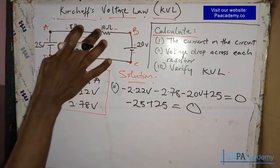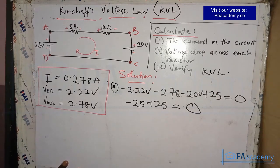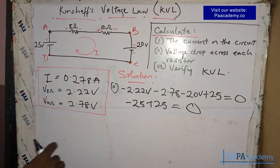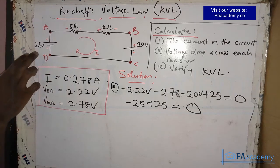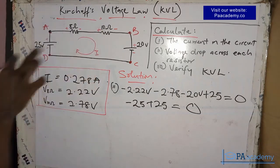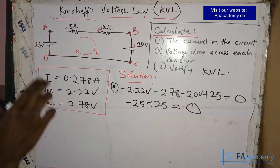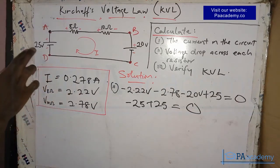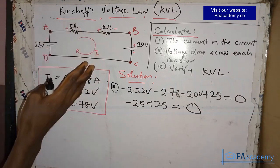This confirms that the circuit is in line with Kirchhoff's Voltage Law — the algebraic sum of voltages in a closed loop equals zero. In other words, the total voltage generated by the voltage sources is exactly used up by the two resistors in the circuit. If you have any questions, doubts, or video requests, please leave them in the comments below, share this video if you found value in it, and subscribe to the channel.